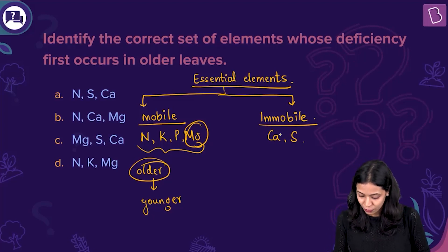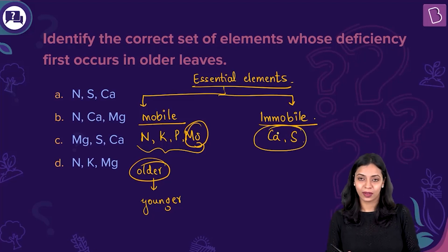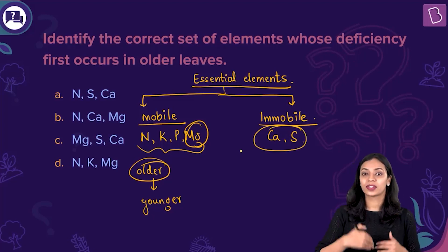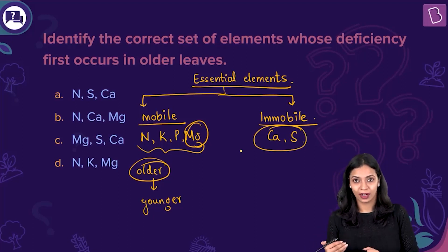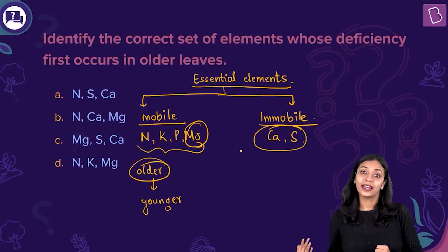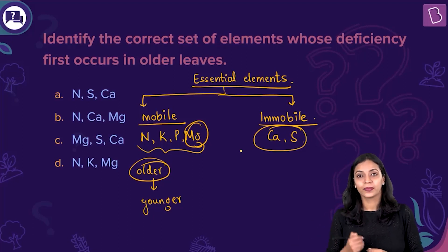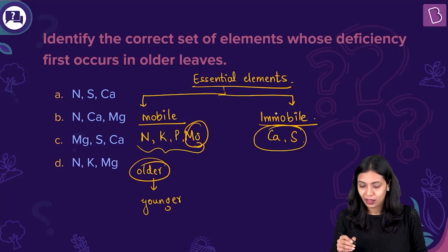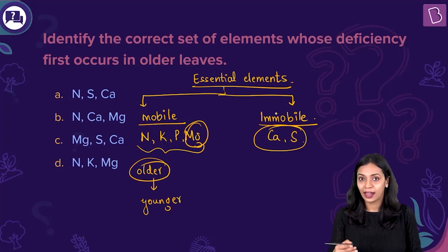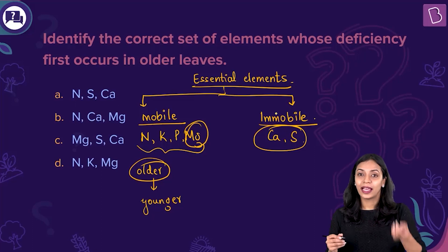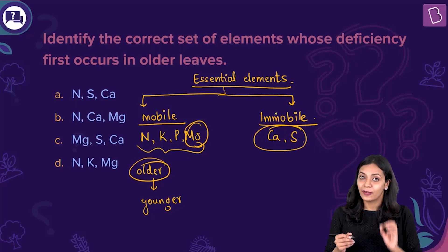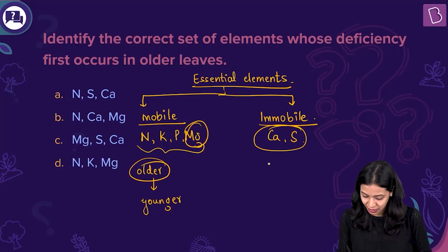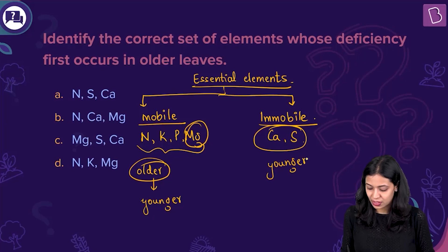In the case of deficiency of immobile elements like calcium and sulfur, calcium is an immobile element because it is a component of the structural framework of the plant — present in the cell wall as calcium pectate. That cannot be easily remobilized. Therefore, if there's a deficiency of an immobile element like calcium, the calcium present in older leaves cannot be mobilized to younger leaves, and the deficiency symptom will first be seen in younger tissues.